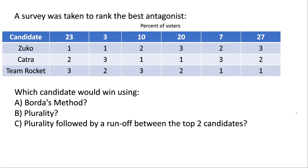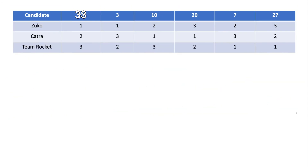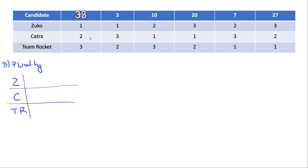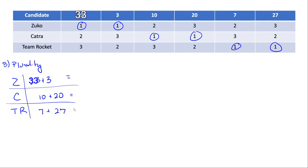Now for part B, who would win using plurality? You should pause the video and try to solve this yourself. For regular plurality, we look at all first-place votes. Zuko has 23 plus 3 votes, Catra has 10 plus 20 votes, and Team Rocket has 7 plus 27 votes. They end up with tallies of 36, 30, and 34 respectively. So Zuko wins by plurality.